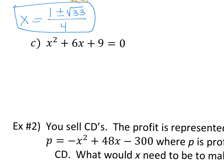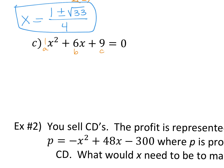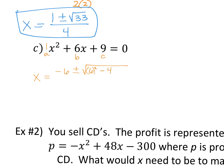Last one before we hit a real-world problem. Plugging this into the quadratic formula: A is one, B is six, C is nine. So X equals negative six plus or minus the square root of — B is six — six squared minus four times A, which is one, times C, which is nine, all over two times one.